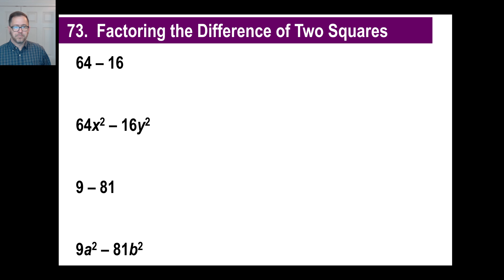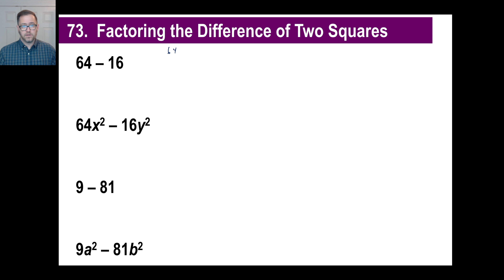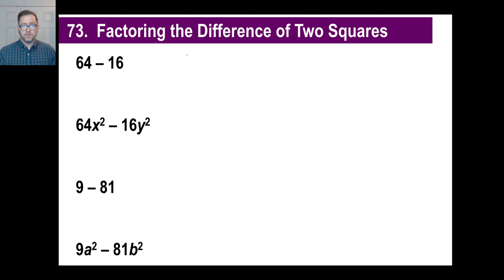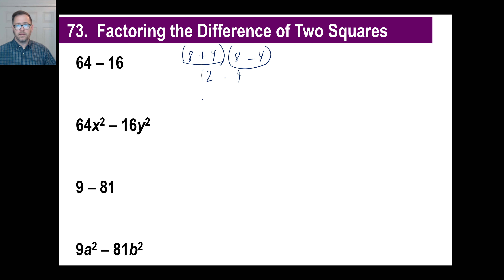Now your job is to take an expression like x squared minus y squared, see that there are two squares and a difference, and factor it. Let's try a couple. Let's do 64 minus 16. We can just do the subtraction: 64 minus 16 is 48. But we can also recognize both of those are perfect squares. The square root of 64 is 8, the square root of 16 is 4. Put them both there twice, add a plus and a minus: 8 plus 4 is 12, 8 minus 4 is 4. 12 times 4 is 48 — there it is.